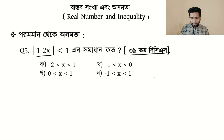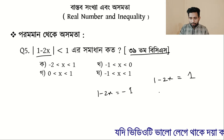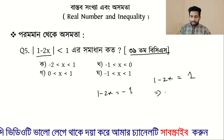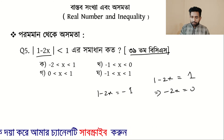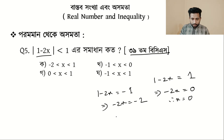So we have: modulus of 1 minus 2i equals 1, and then we use the negative case — 1 minus 2i is equal to minus 1. Solving, we get x is equal to 0.